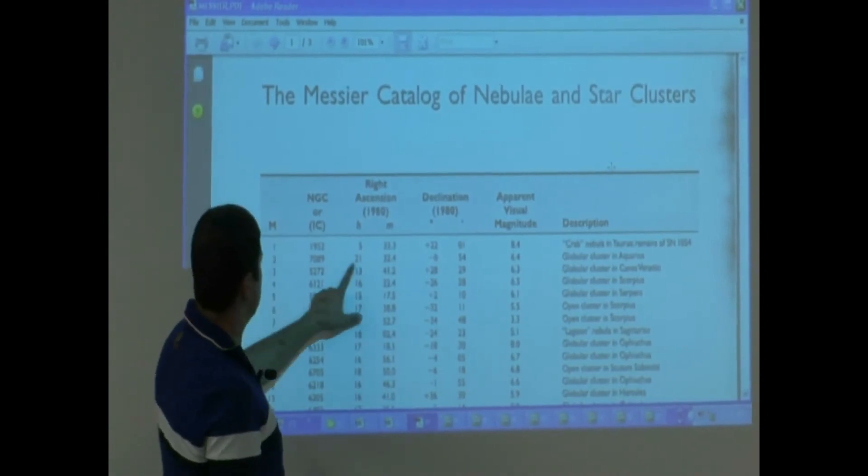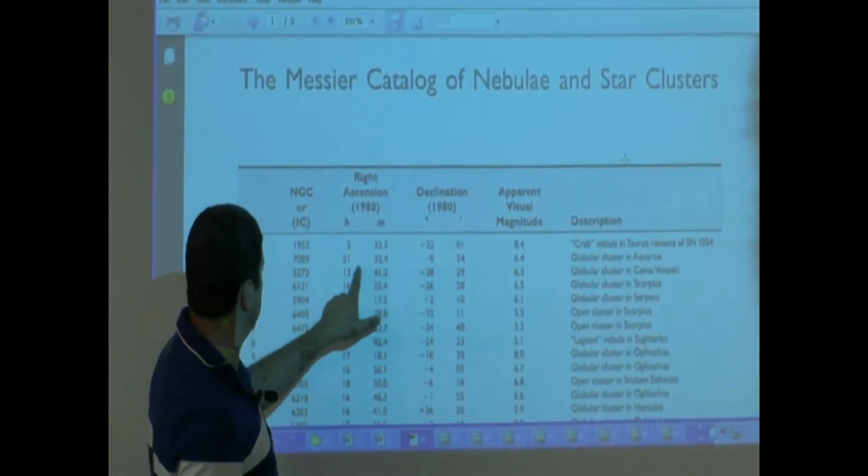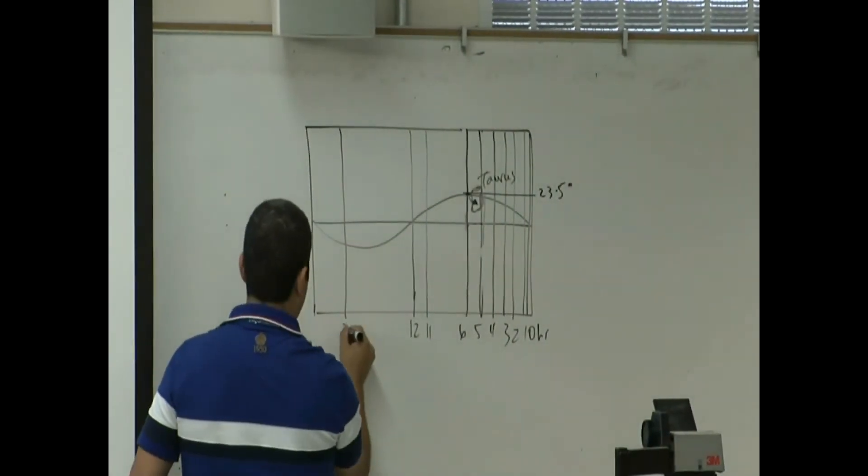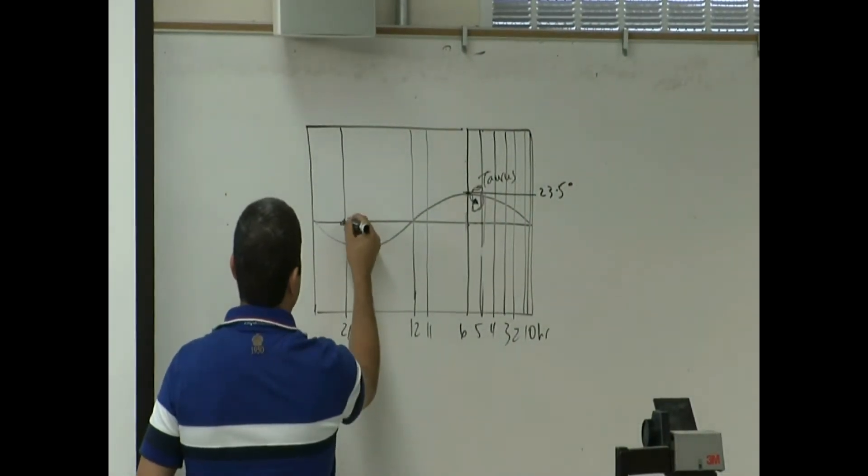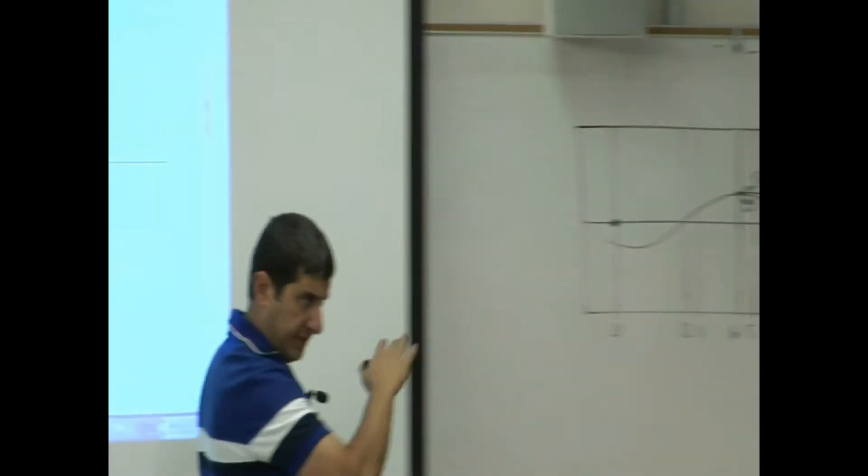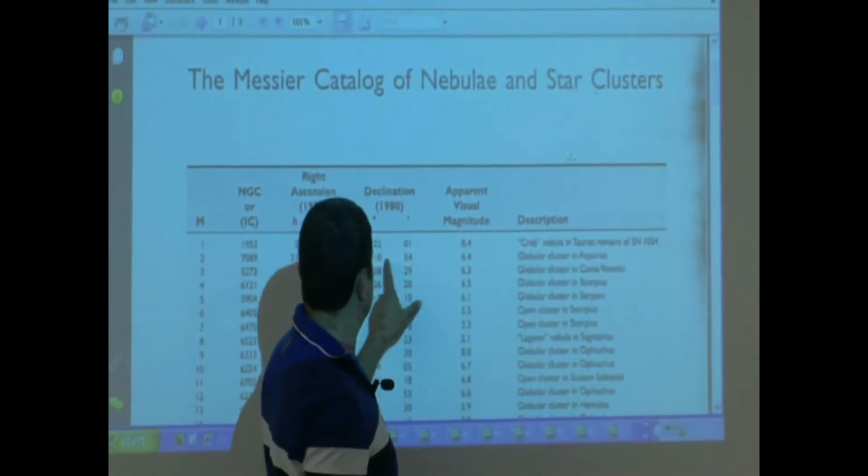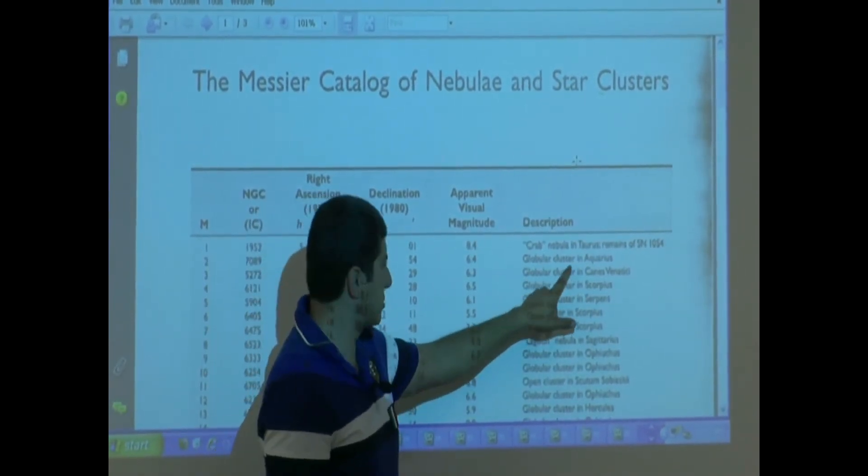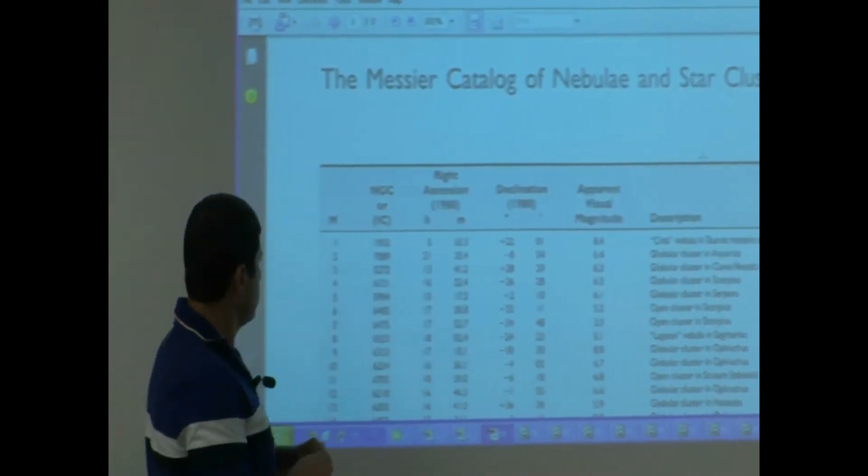What other kinds of objects are there? You may see object two, right ascension 21, declination zero, so roughly around here. 21 would be here. Declination zero, so somewhere around here in the middle of the sky. Apparent visual magnitude 6.4, what is it? Globular cluster.